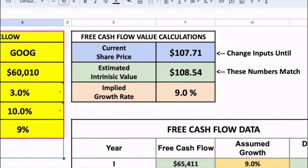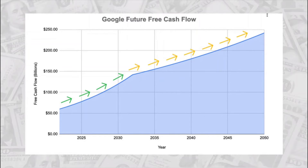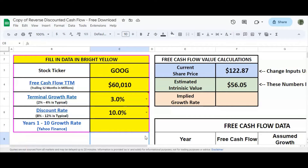By reducing the growth rate to 9%, we get an estimated intrinsic value that nearly matches the company's current share price. So now that we've landed on a growth rate, let's step back and look at what we're saying: we believe that Google will grow its free cash flow by 9% per year over the next 10 years, and then for as long as it exists after that, it will grow at roughly 3% per year.